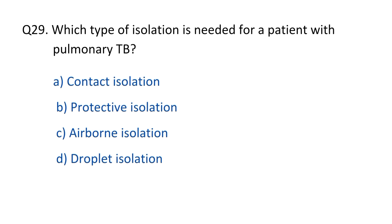Question No. 29. Which type of isolation is needed for a patient with pulmonary TB? The right option is option C, airborne isolation.